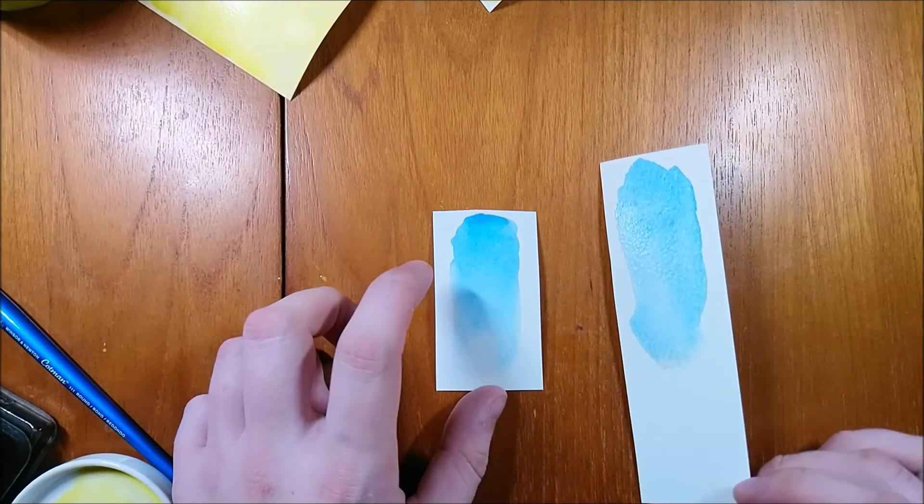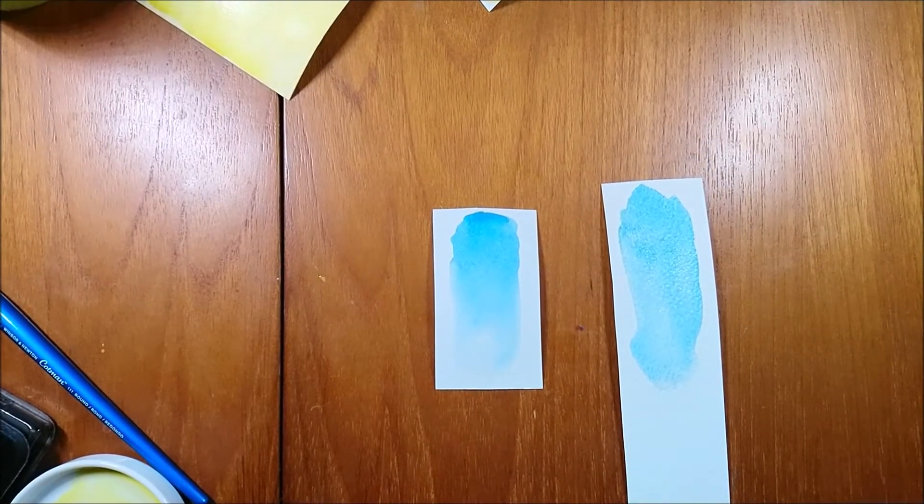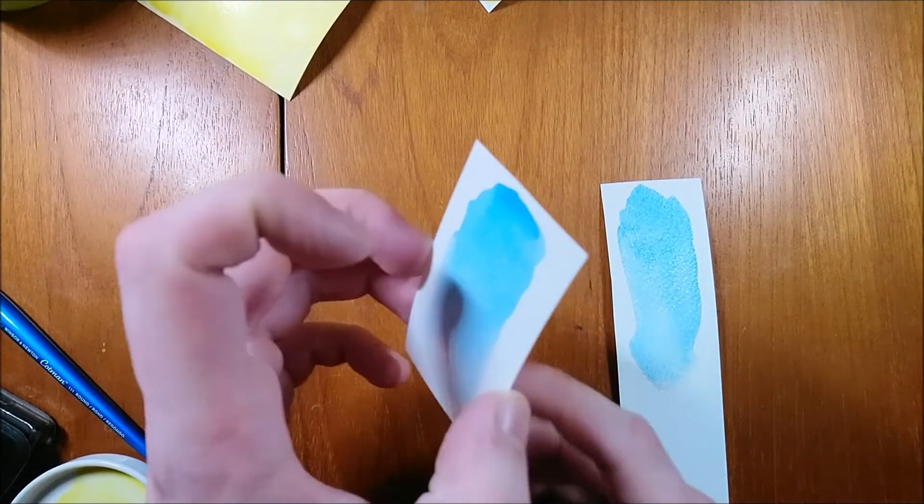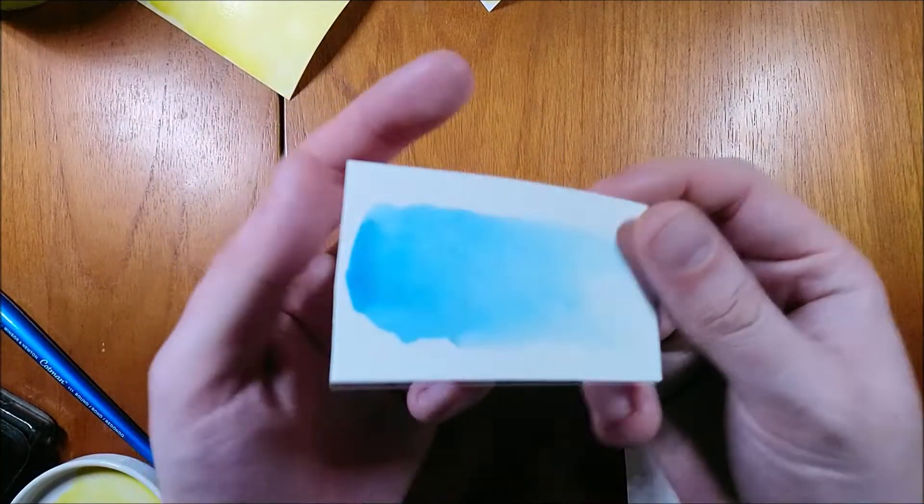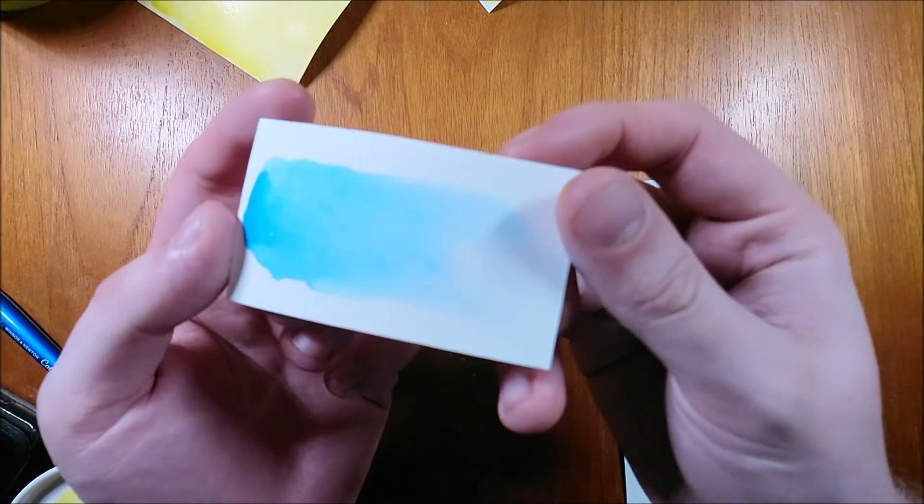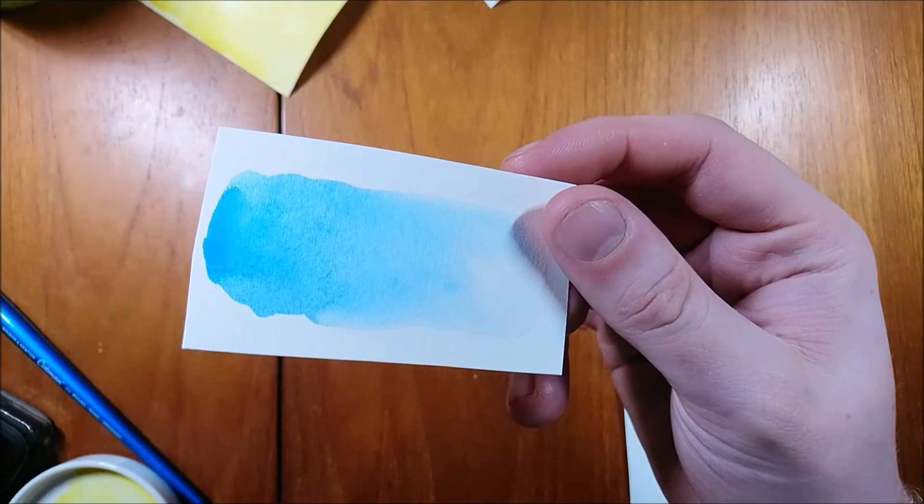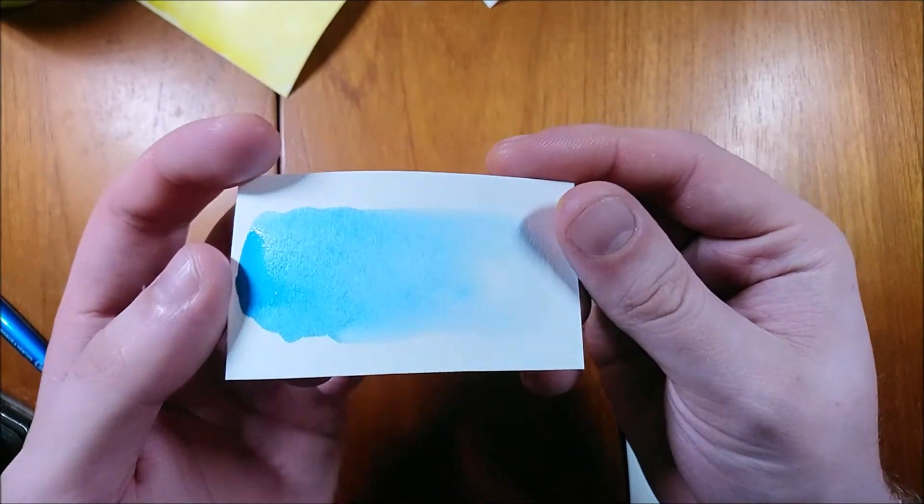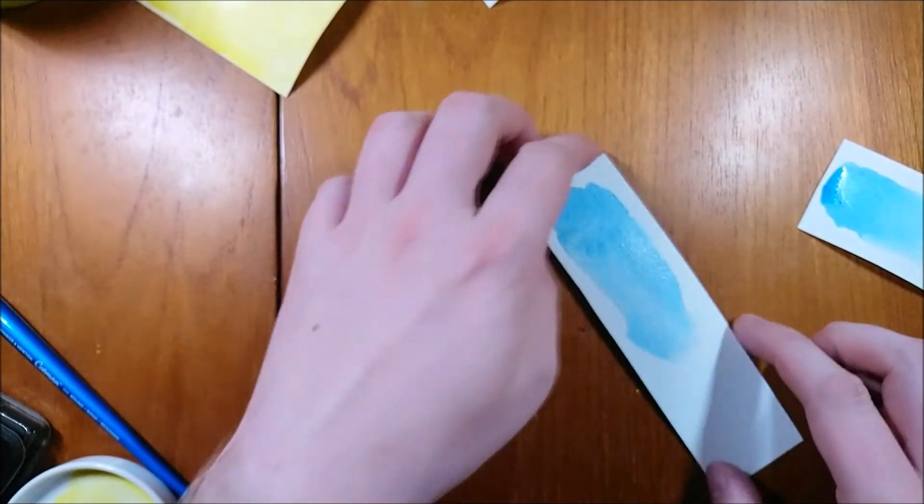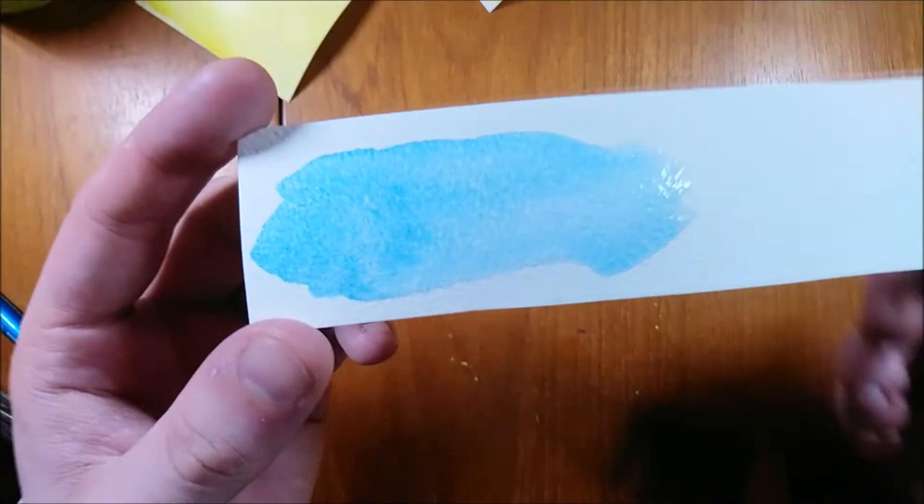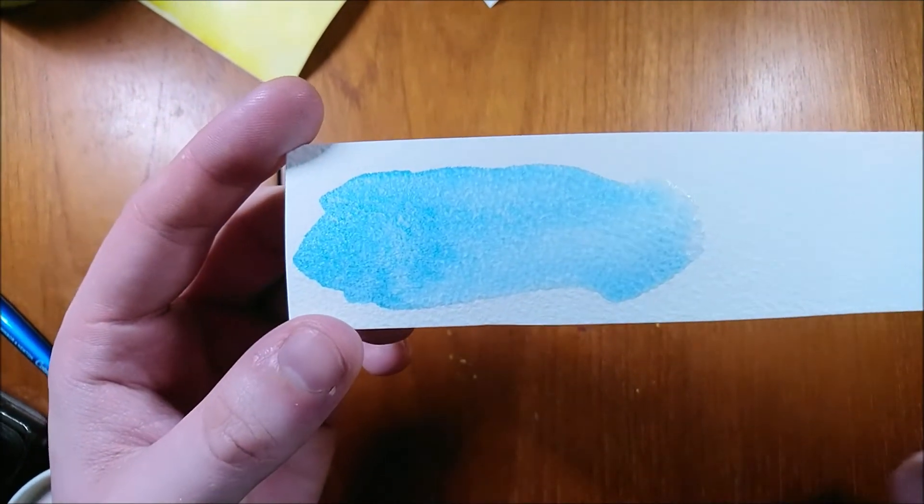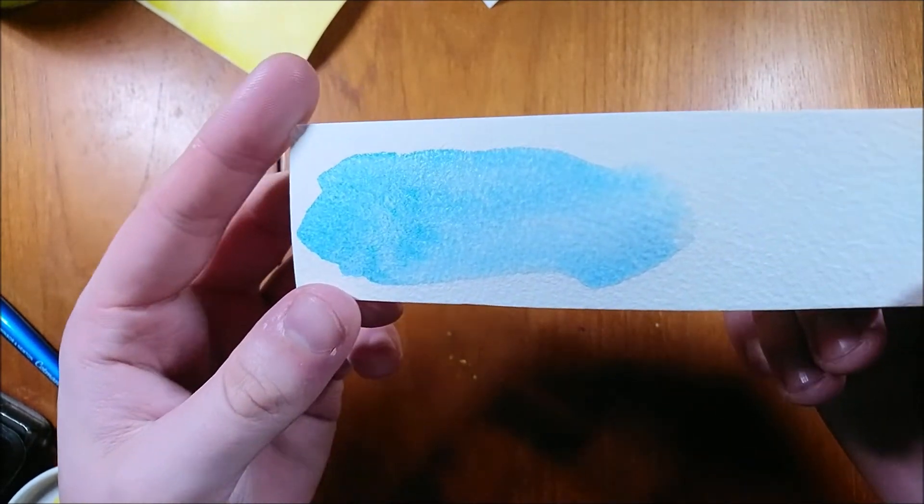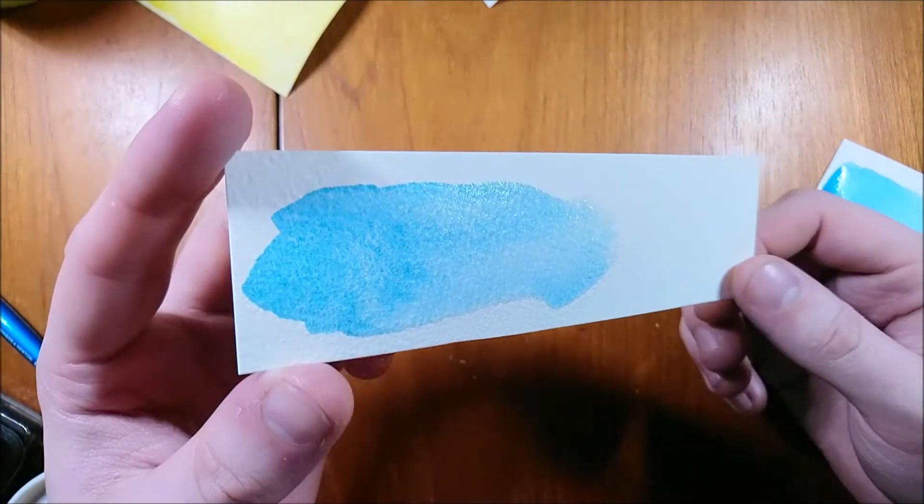So I painted out some cerulean blue on hot pressed watercolor paper on the left and on the right is it on rough textured paper. So you'll be able to see the granulation a lot more on it. You can see on the hot pressed it's quite smooth, the paint is quite uniform on it, and you can't really see the texture of the granulation so much compared to the rough where you can really see that texture and where the pigment has settled into the grooves of the paper.